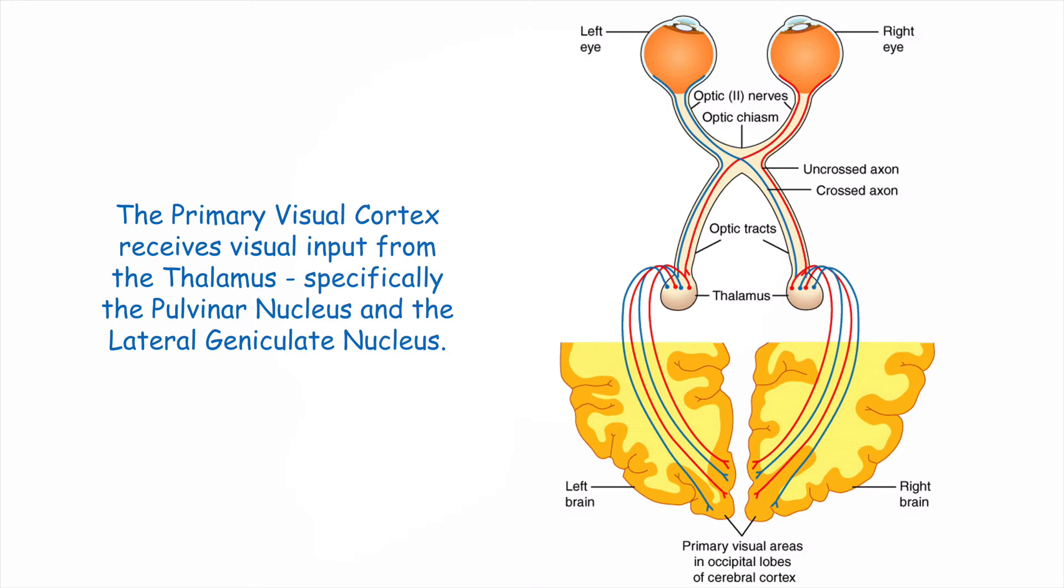The primary visual cortex receives visual input from the thalamus, specifically the pulvinar nucleus and the lateral geniculate nucleus. These two midbrain nuclei, the pulvinar nucleus and the lateral geniculate nucleus, do some early visual processing before information is sent back to area V1.